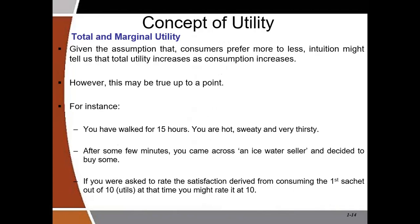Some economists believe that satisfaction can be ranked while others believe it can be measured in figures. Those who believe satisfaction can be ranked are called ordinalists. Those who believe satisfaction can be measured in units are called cardinalists. We will take the cardinalist approach, where the unit of measurement of satisfaction is called utils.